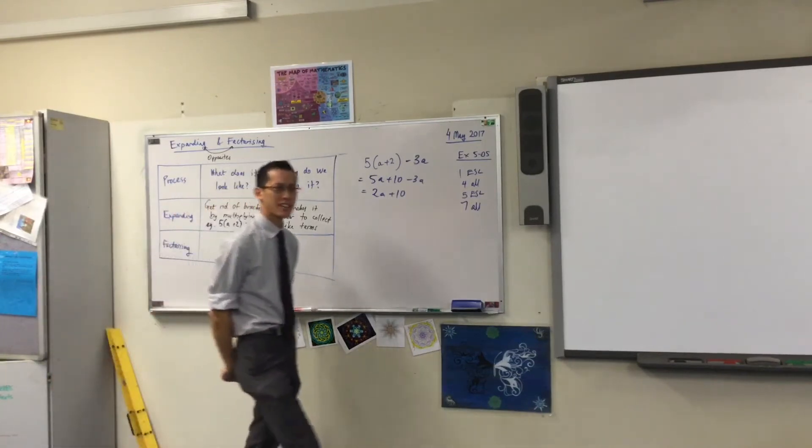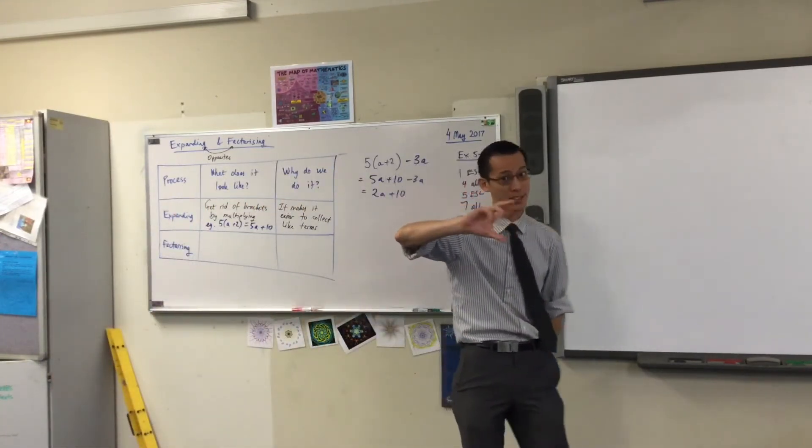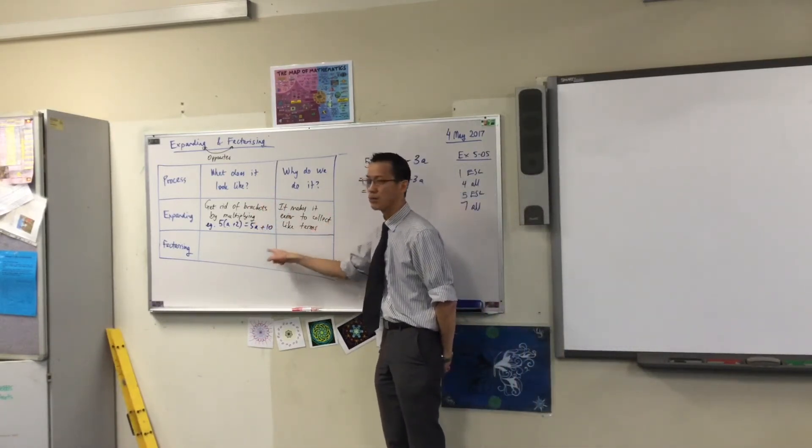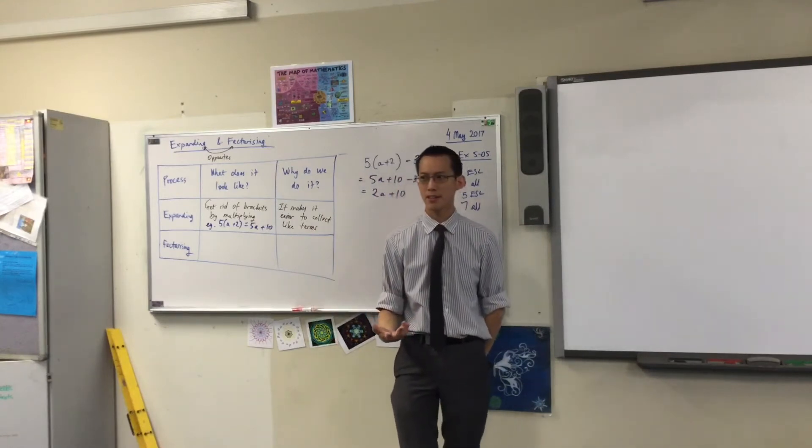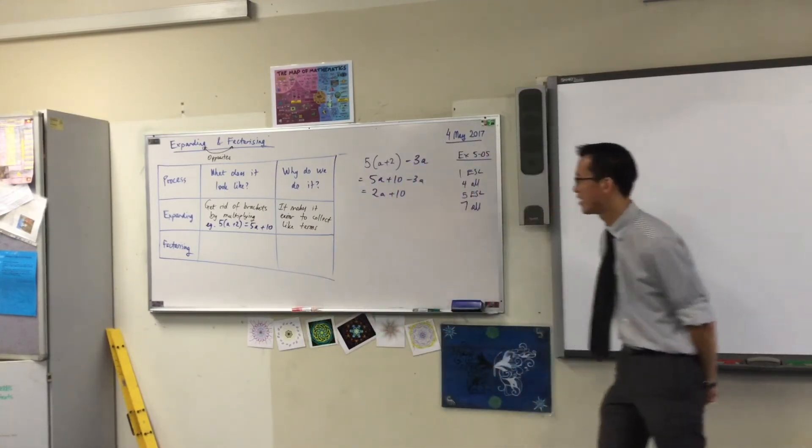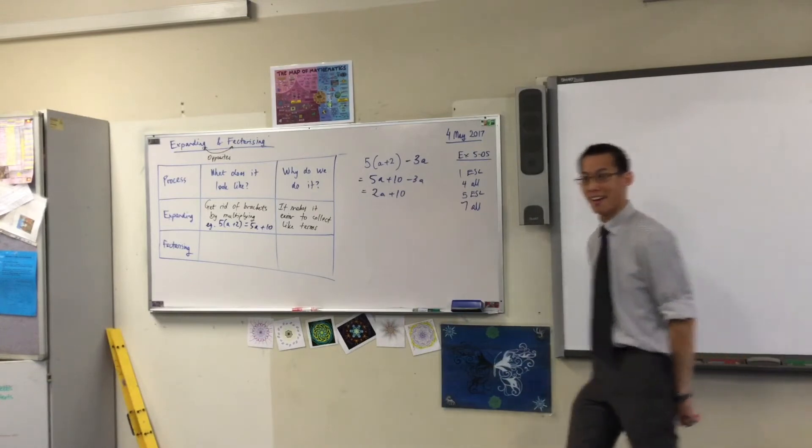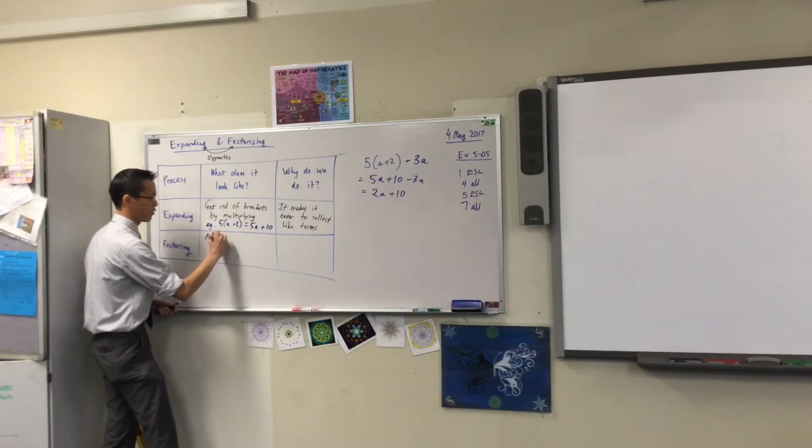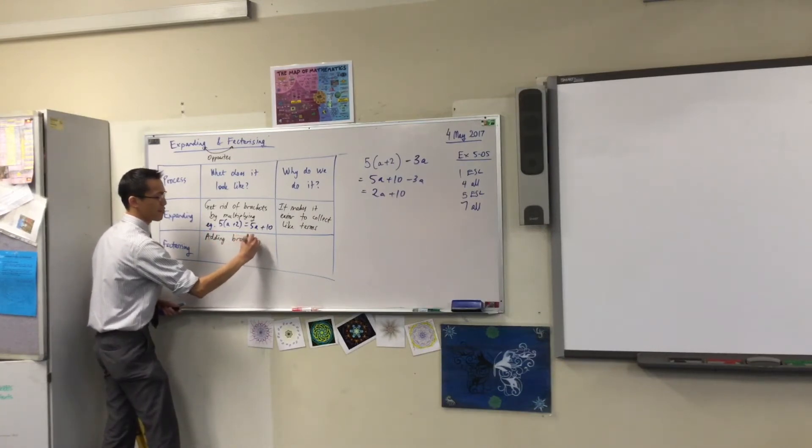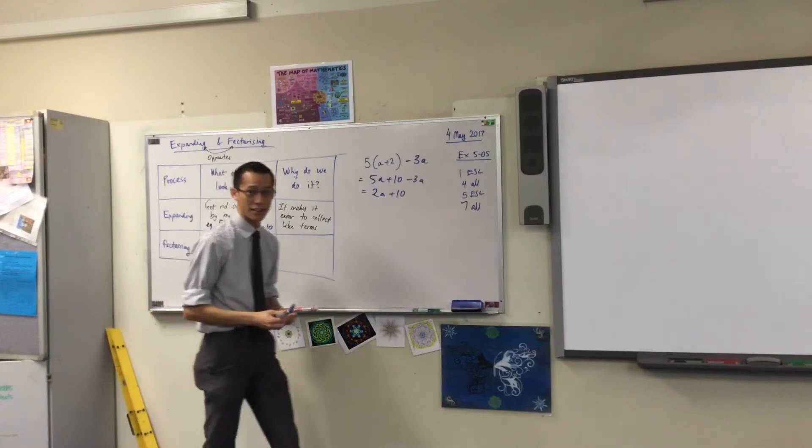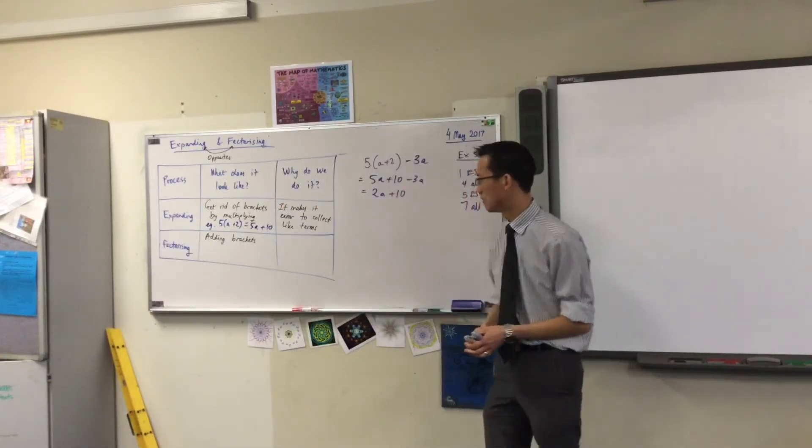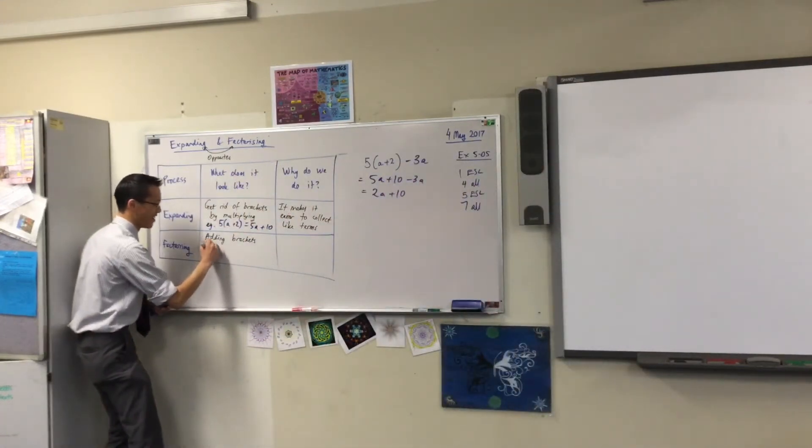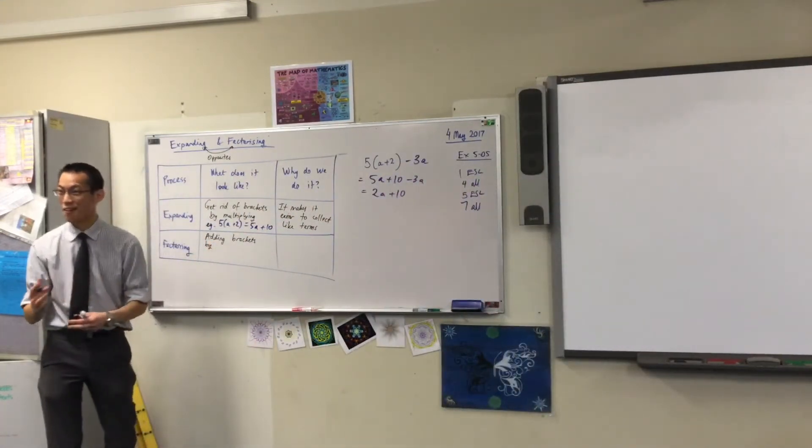Okay, so we understand expanding. Can you explain factorizing then? If I told you from the beginning that these are opposites to each other, two sides of the same coin, and this is the way we worded expanding, how would you word factorizing? I'm going to start by adding brackets, I think that's a great way to start, because if we're getting rid of brackets before, if you factorize, you'll have brackets where you didn't have them. But how do I do that? Find things.